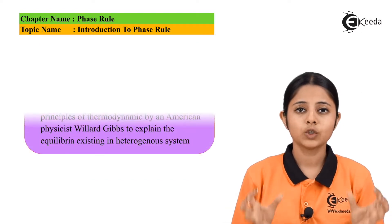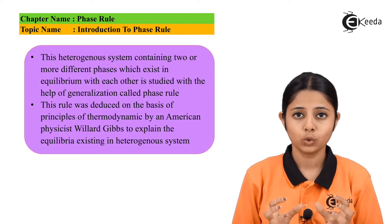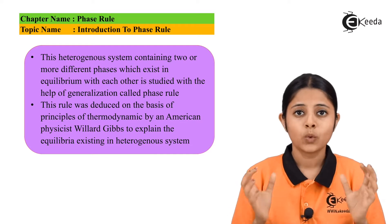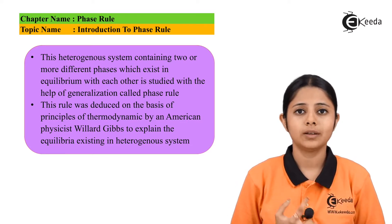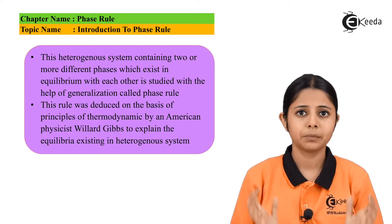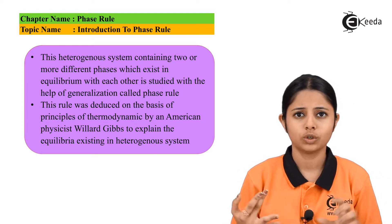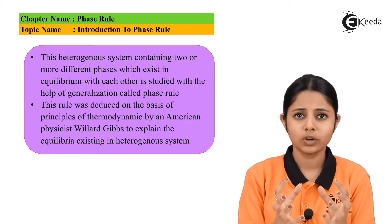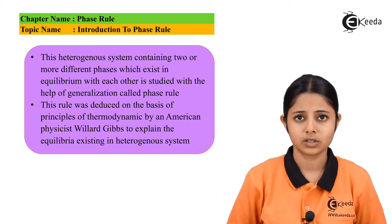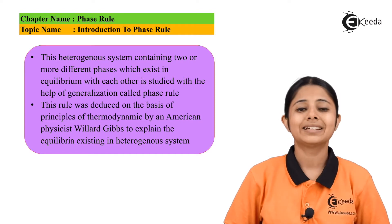The heterogeneous systems which are two or more component systems will always be in equilibrium if the temperature, concentration, and pressure are kept constant. That means if there is no change in temperature, no change in pressure, no change in concentration, and we are just keeping these two or three component systems together, then these systems will always be in equilibrium.